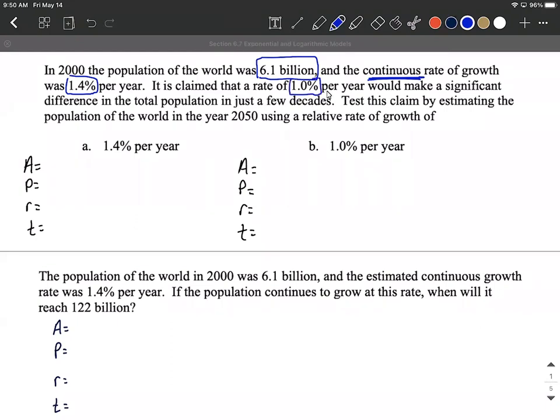I'll go ahead and identify that key number going on here in this word problem. Let's test this claim by estimating the population of the world in the year 2050 using a relative growth rate of first 1.4 percent per year and then 1.0 percent per year. So as we get going on this we know the starting amount. We also know it says continuous, that big keyword which is pointing us towards this formula A(t) equals P times e raised to the r times t. And it's a growth rate, so things are getting bigger, that's going to be a positive rate as we plug this in.